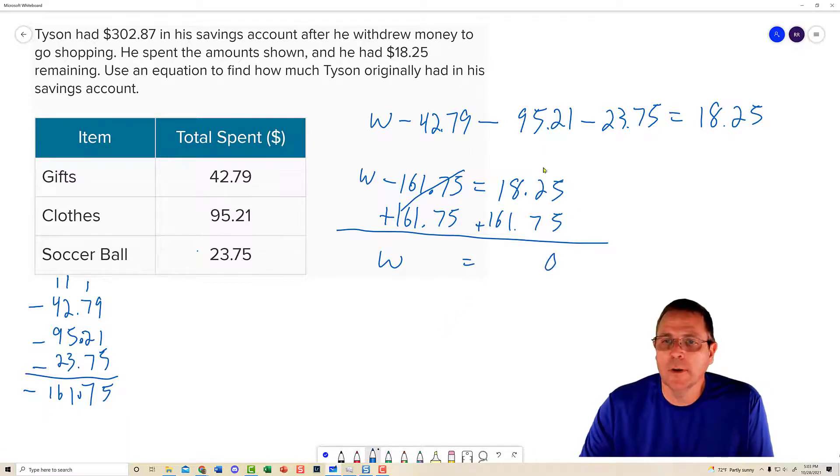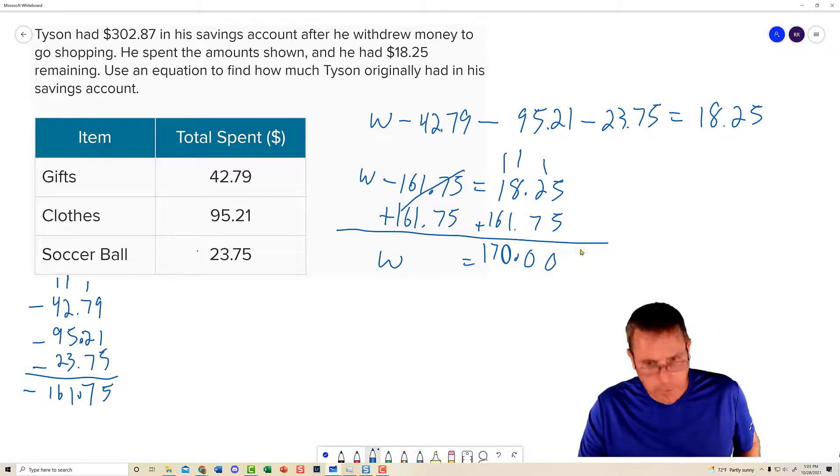And when I do that, these are going to zero out. Leaving W. The amount he withdrew is going to be equal to. Add these up. That's going to become a 10. Carry the 1. That's going to become a 10. Carry the 1 again. Decimal comes down. That's going to become a 10. Carry the 1 again. That will end up being a 7 and a 1. So he withdrew. Go ahead and circle the whole thing there. $180.